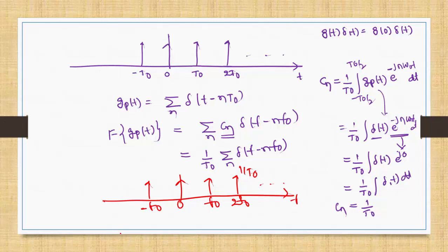In summary: the Fourier transform of any periodic signal is discrete in nature, and the amplitude of each impulse depends on the Cn value. The Fourier transform of an impulse train is also an impulse train, with amplitude 1/T0. Thank you.